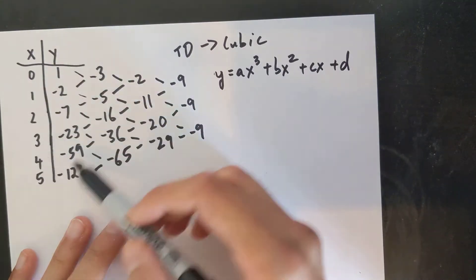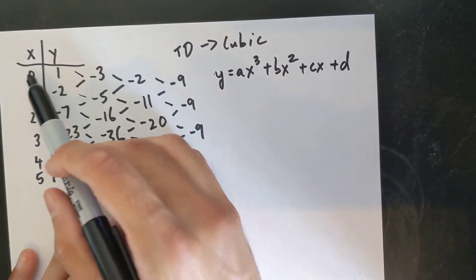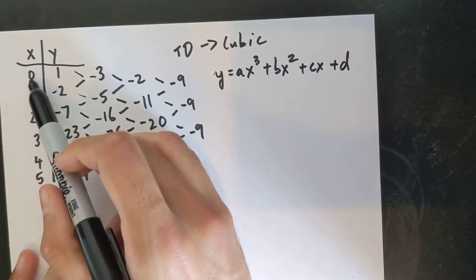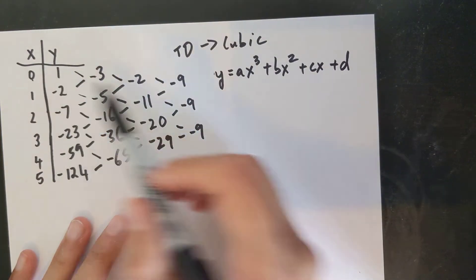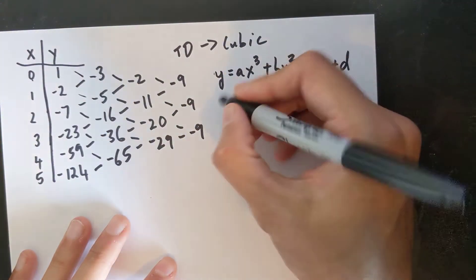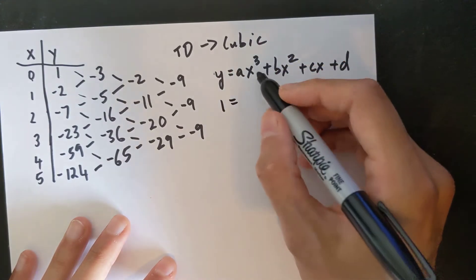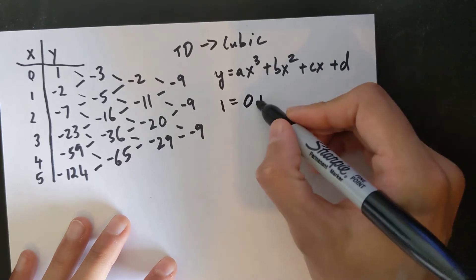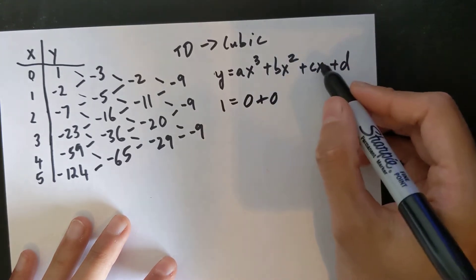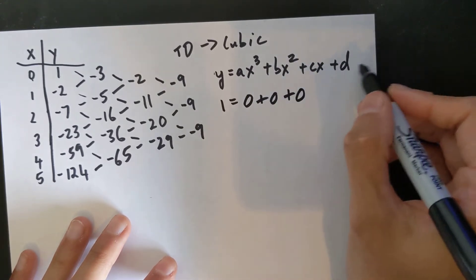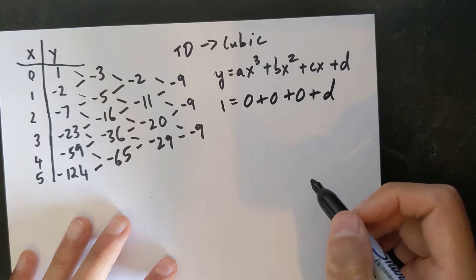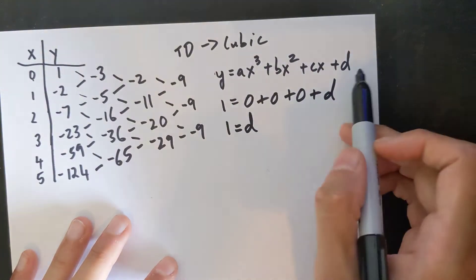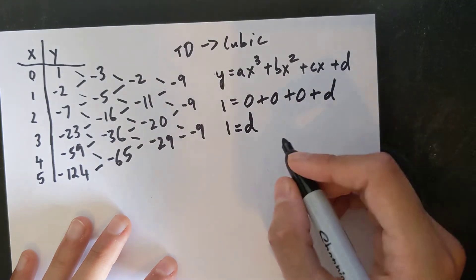Let's start by subbing in points from this table. I always start with x or y intercepts — the easiest points to sub in. So my x is 0 and my y is 1. If I sub in 0 for x, the x³, x², and x terms all become 0, so I just have plus d. So 1 equals d. I found d really quickly by subbing in the intercept.